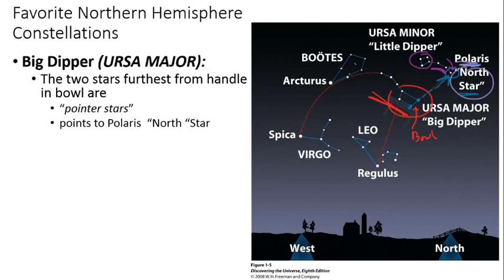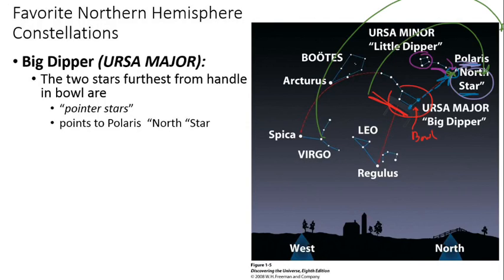Related to that, we will see the constellations and asterisms in the vicinity of the North Star move counterclockwise around Polaris. So everything moves counterclockwise. We talked about this in a different lecture — we have circumpolar stars that don't dip below the horizon.